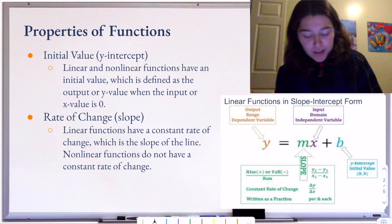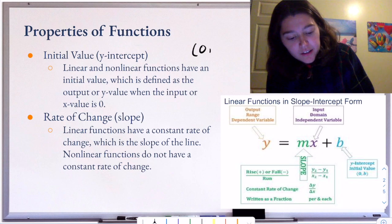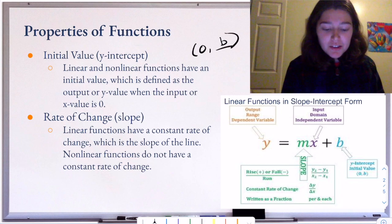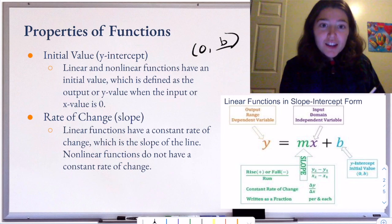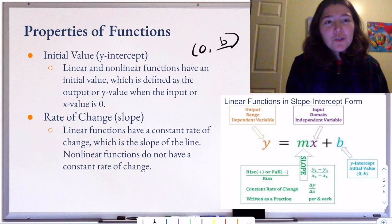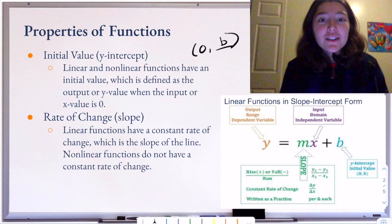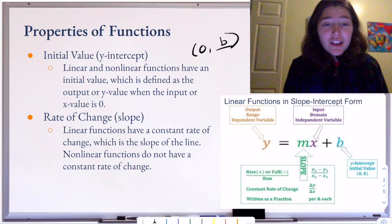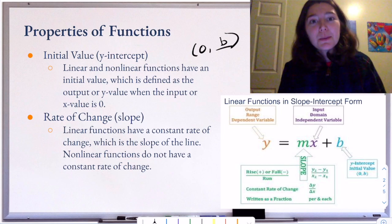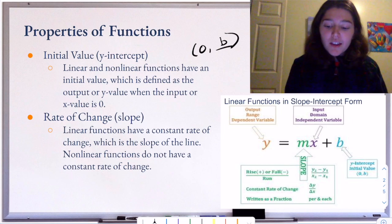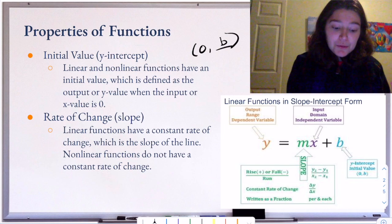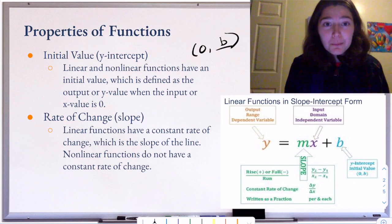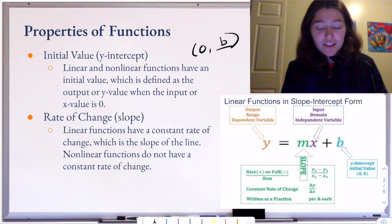The initial value is always going to be the point zero-comma-something. It's b in slope-intercept form, it's going to be on the y-axis, and in a word problem it's normally going to represent our starting situation. Because our x-value is zero — zero days, zero hours — it's the beginning of a process. When we look at all types of functions, we can compare the initial value to understand them better.